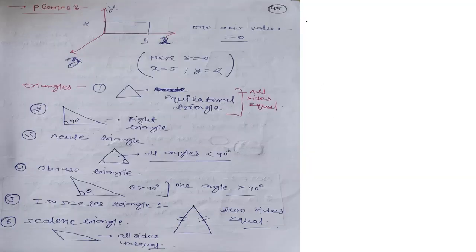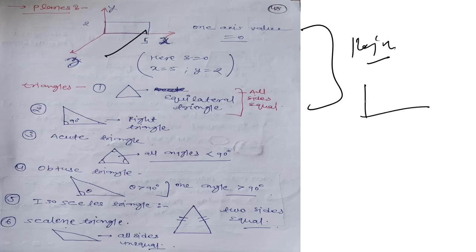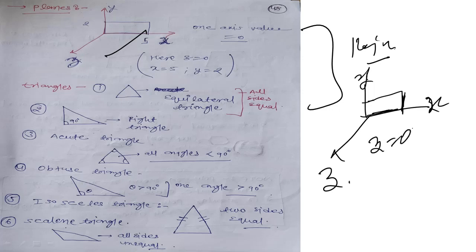Now we will discuss planes. We just discussed what is a point and what is a line; the same thing we will discuss for planes. In planes, two things are not equal to zero. For example, X is not equal to zero and Y is also not equal to zero, which means Z equal to zero. That is known as a plane. So different kinds of planes are there — like triangles.